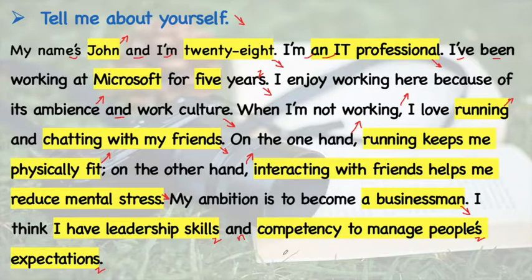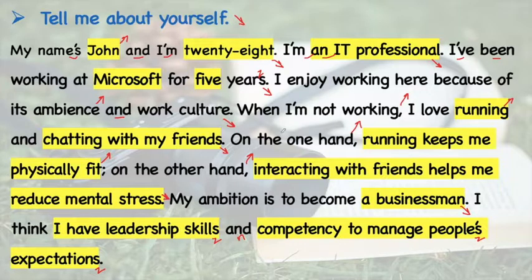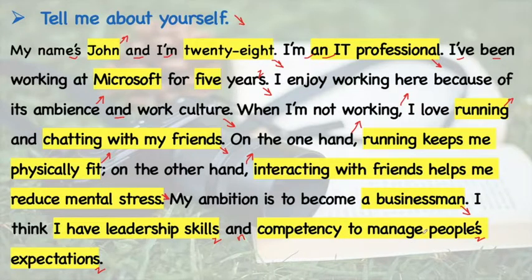Let me read it one more time non-stop: 'My name is John and I'm 28. I'm an IT professional. I've been working at Microsoft for five years. I enjoy working here because of its ambience and work culture. When I'm not working, I love running and chatting with my friends. On the one hand, running keeps me physically fit; on the other hand, interacting with friends helps me reduce mental stress. My ambition is to become a businessman — I think I have leadership skills and competency to manage people's expectations.' Then you can ask the other person too — 'Tell me about yourself, what do you do, what are your hobbies?'